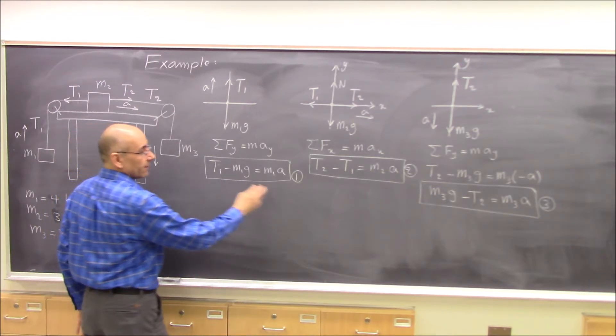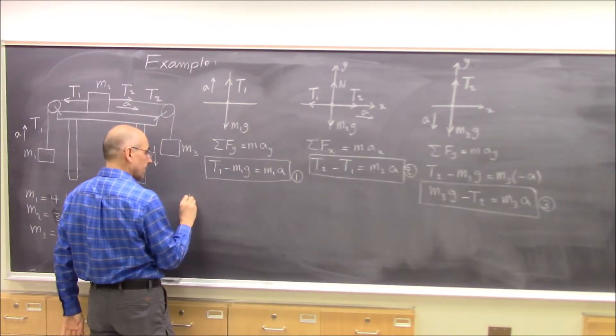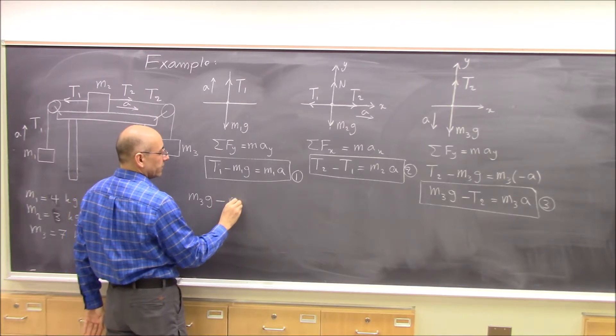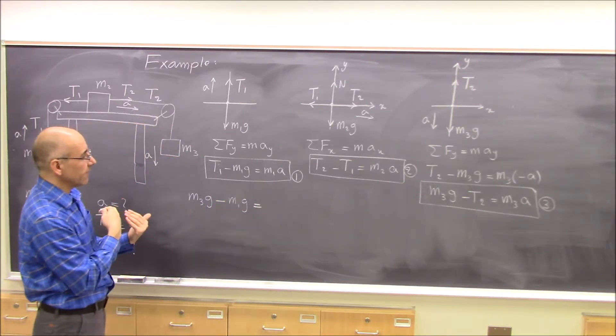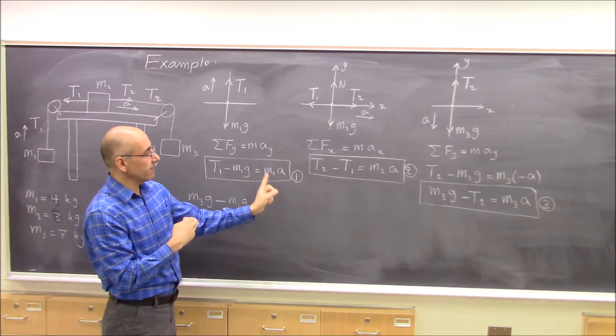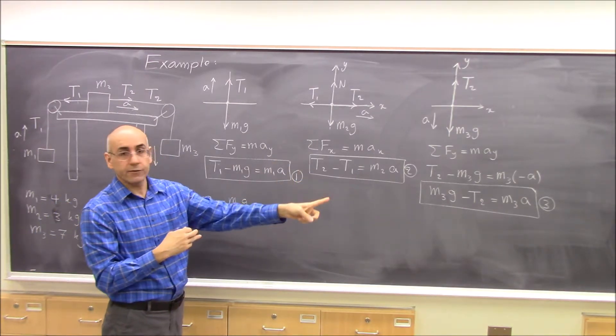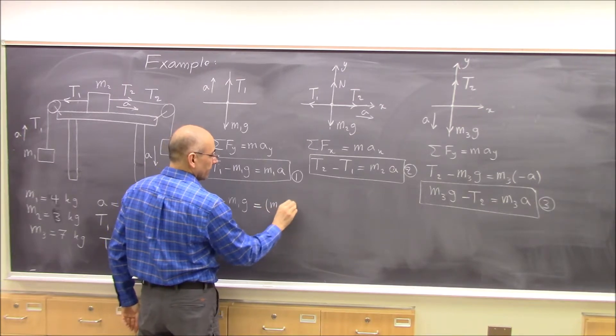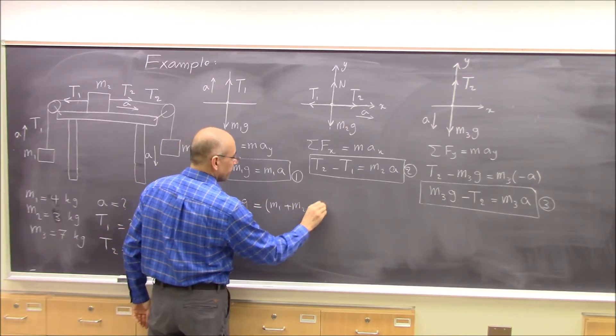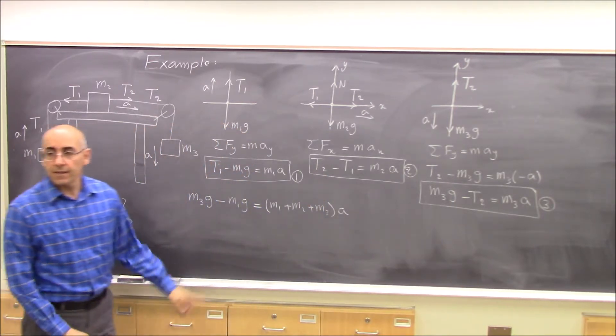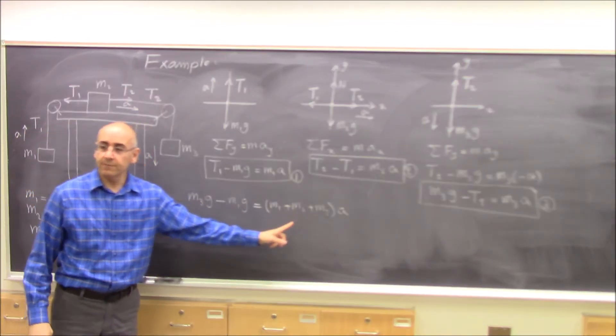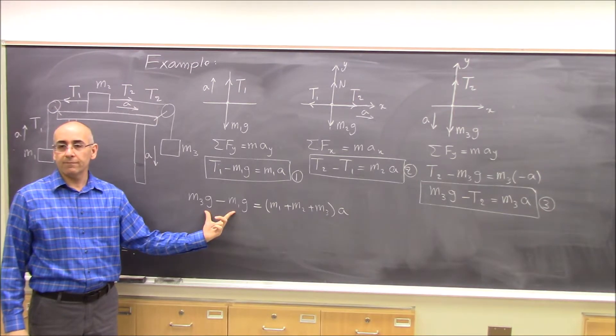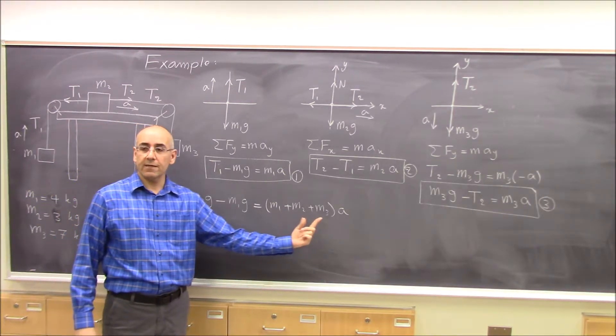What do we get? We get m3g minus m1g. That's all we get on the left-hand side. On the right-hand side, we have m1a, m2a, m3a. We add them. We get m1 plus m2 plus m3 times a. Again, look at this equation. Tells you the net force acting on the whole system is equal to total mass times acceleration.